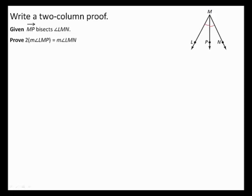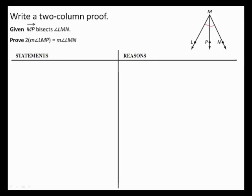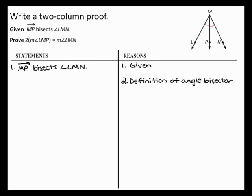Write a two column proof. Given ray MP bisects angle LMN, prove 2 times the measure of angle LMP equals the measure of angle LMN. To begin this two column proof, first start with the given information. You are given that ray MP bisects angle LMN. Next, by the definition of angle bisector, you can state that angle LMP is congruent to angle NMP.